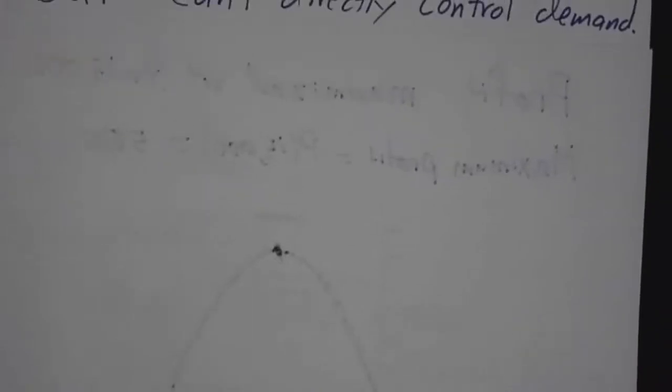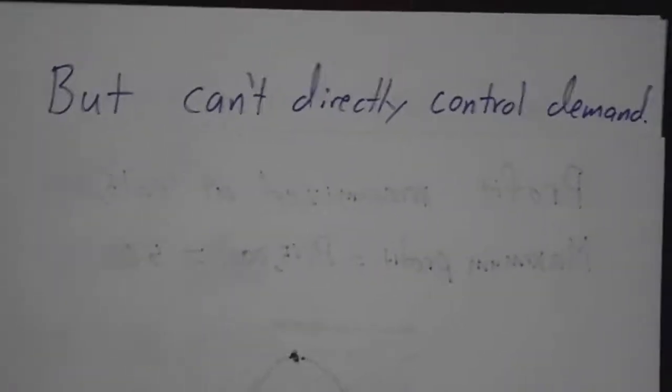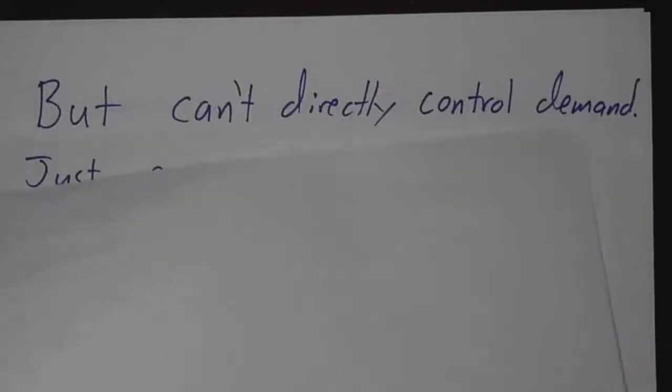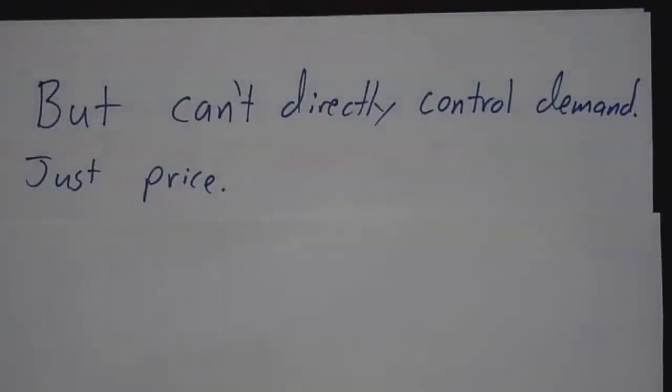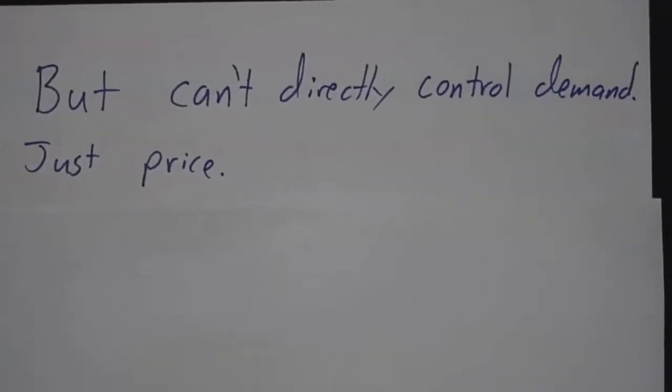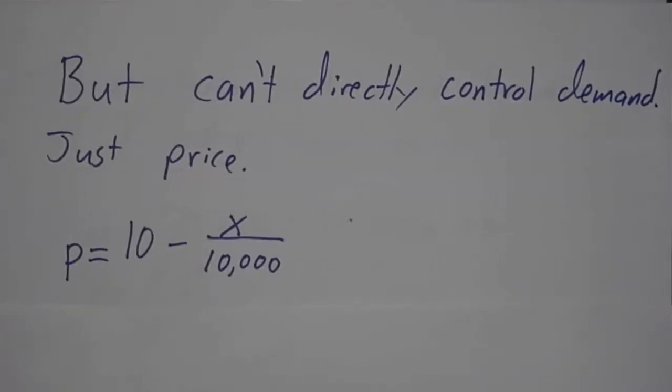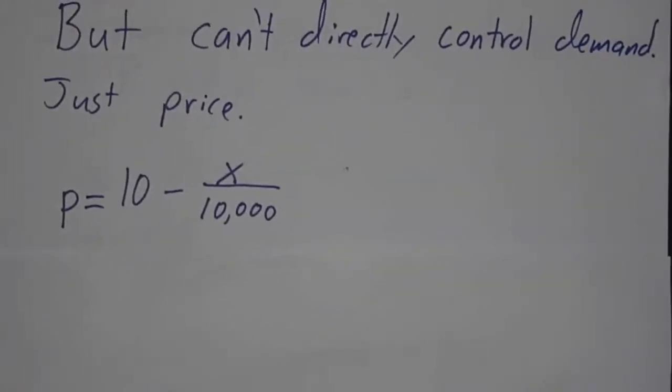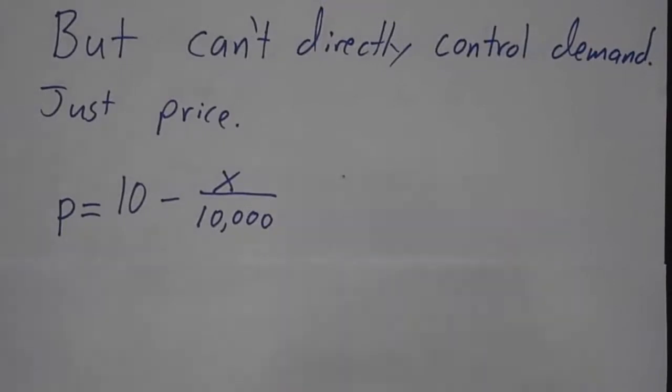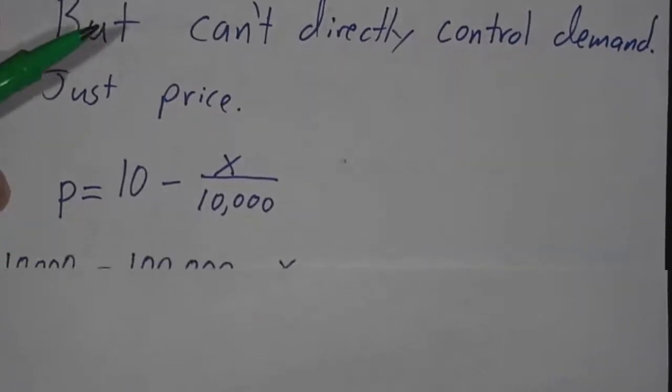In real life, you can't control demand. You don't really make a certain number of items and then just throw them on the market at auction. What you do is you adjust the price. And then according to the price, a different number of people will put in orders. And then you fill the orders. So instead of thinking of price as a function of production level, you should think of production level as a function of price.